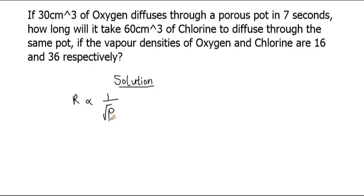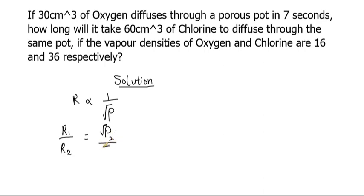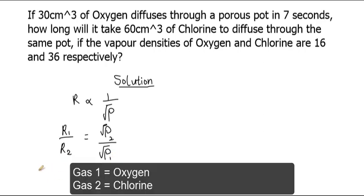According to Graham's law, when we have two gases being considered, we have r1 over r2 — the first and second gas — equal to the square root of the density of the second gas divided by the square root of the density of the first gas.